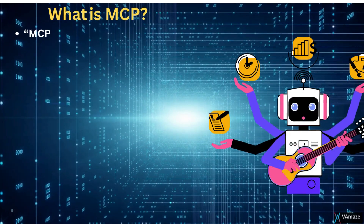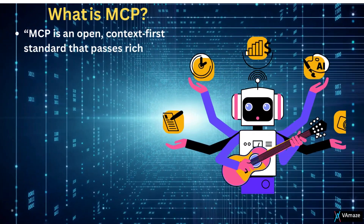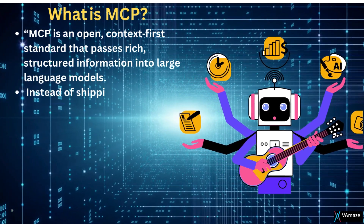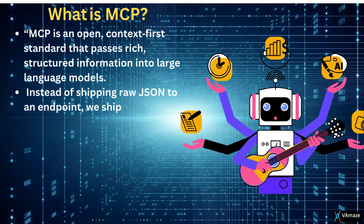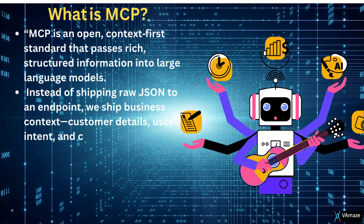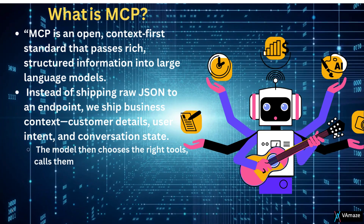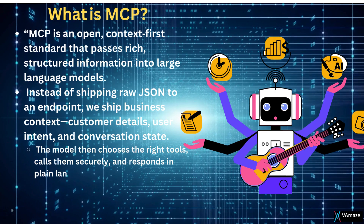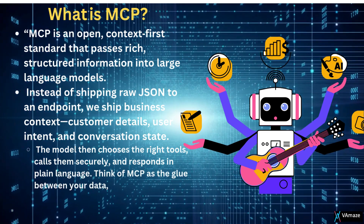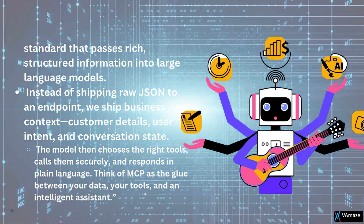What is MCP? MCP is an open, context-first standard that passes rich structured information into large language models. Instead of shipping raw JSON to an endpoint, we ship business context, customer details, user intent, and conversation state. The model then chooses the right tools, calls them securely, and responds in plain language. Think of MCP as the glue between your data, your tools, and an intelligent assistant.